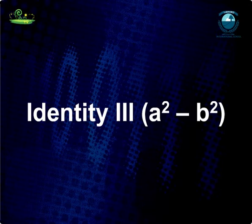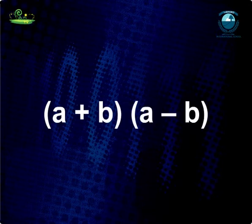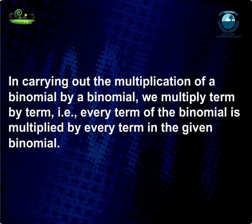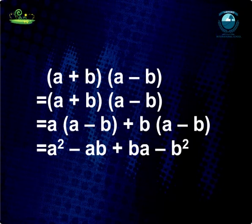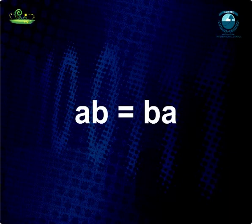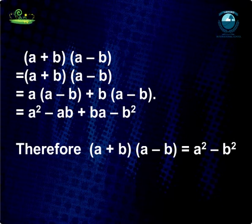Identity 3: a²-b². Let's find the product of (a+b)(a-b). Multiplying term by term, every term of one binomial is multiplied by every term in the other: (a+b)(a-b) = a(a-b) + b(a-b) = a²-ab+ab-b². Since ab = ba, therefore (a+b)(a-b) = a²-b².